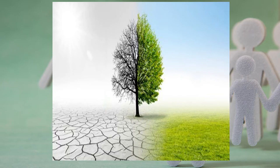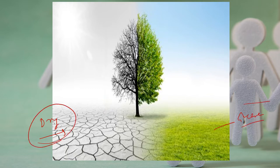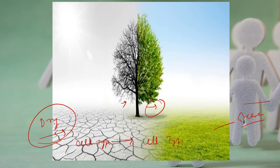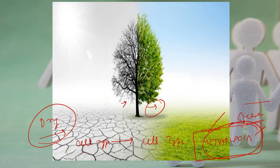Look at this image: one half appears dry and the other half appears greener. The same tree has undergone some change - you have a healthy part on one side and a drier part on the other. One type has changed to another form. When your cell changes from one type to another type, we call it metaplasia - and that's going to be the topic of discussion today. 'Meta' means change, 'plasia' means growth.